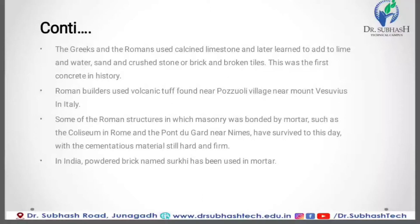The Roman builders used volcanic material found near Pozzoli village near Mount Vesuvius in Italy. Some Roman structures in which masonry was bounded by mortar — such as the Colosseum in Rome and the Pont du Gard near Nîmes — have survived to this day with the cementing material still hard and firm. It is noted that the Romans added blood and milk to their mortar and concrete to achieve better workability. Hemoglobin is a powerful air-entraining agent and plasticizer, which is perhaps yet another reason for the durability of Roman structures.